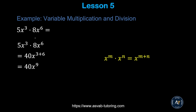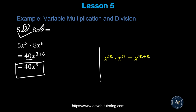The first thing we'll learn is how to multiply variables. When you multiply variables, the first thing you have to do is add the exponents. So here, 5 times 8 is 40, and you add the exponents together: 3 plus 6 gives you 9, so the answer is 40x to the power 9. The formula: if you multiply x to the power m by x to the power n, you add the exponents.